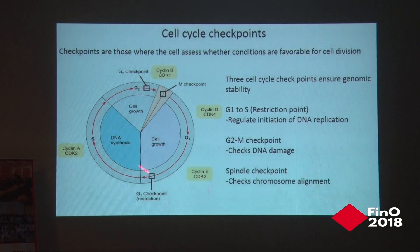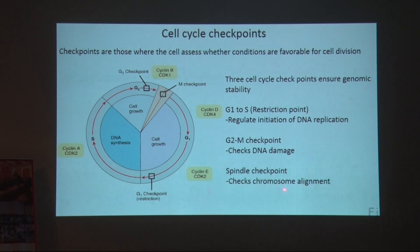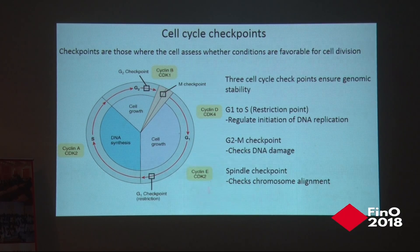Another checkpoint is the spindle checkpoint, also mediated by different CDKs and cyclins, where it is checked if chromosome alignment is correct. If chromosomes are not aligned properly, they will not separate properly, which could lead to genomic instability, cancer, or chromosomal translocations. These are the three important checkpoints that the cell goes through during division.